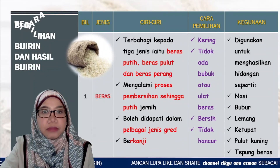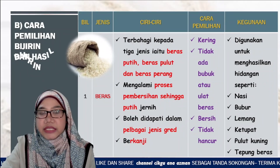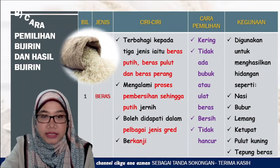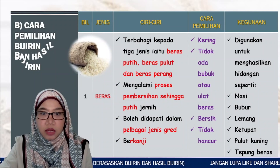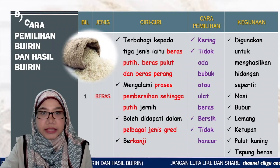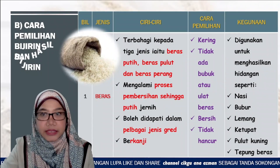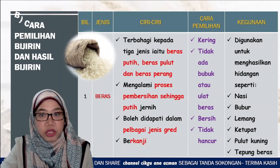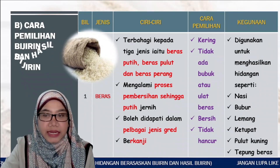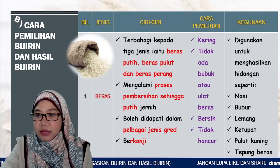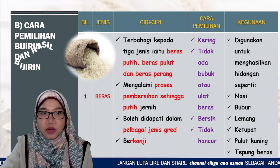Secara terperinci, beras terbahagi kepada 3 jenis iaitu beras putih, beras pulut dan beras perang. Beras mengalami proses pembersihan sehingga putih jernih dan berkanji. Cara pemilihan beras: beras mestilah dalam keadaan kering, tidak ada bubuk atau ulat beras, bersih dan tidak hancur. Kegunaan beras ialah untuk menghasilkan hidangan seperti nasi, bubur, lemang, pulut kuning dan sebagainya, bersesuaian dengan menu orang Asia.